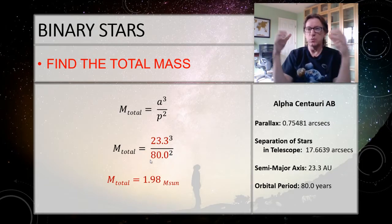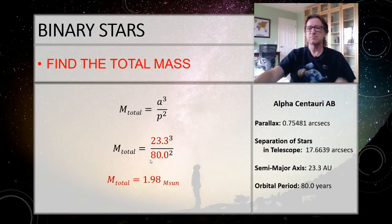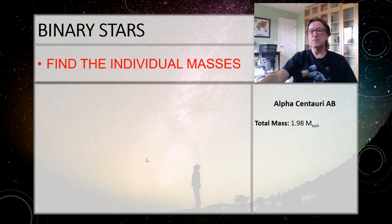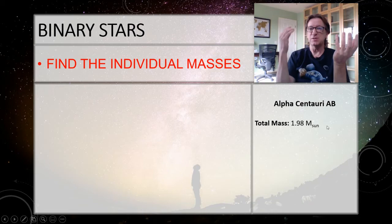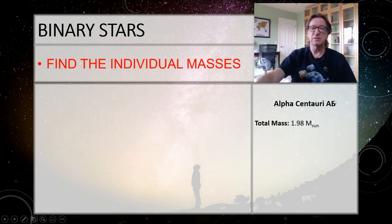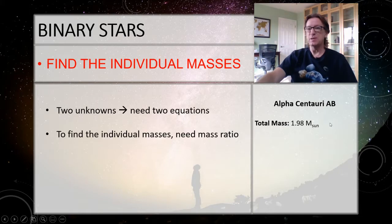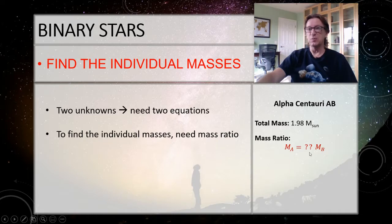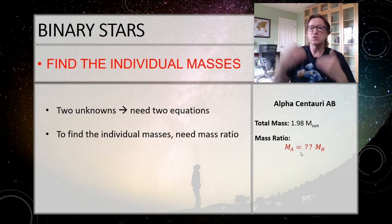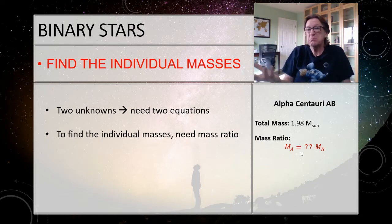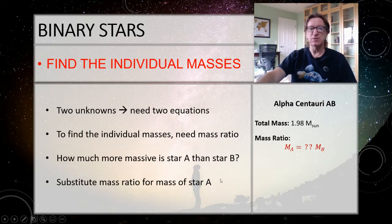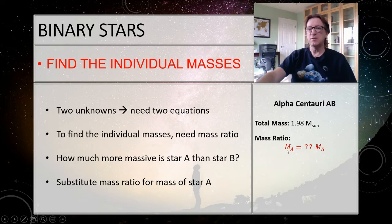Now I need to find the individual masses. I have two unknowns — the mass of Alpha Centauri A and the mass of Alpha Centauri B — so I need two equations. The first equation is: ma + mb = 1.98. The second is the mass ratio, which tells you how much more massive star A is than star B. The mass ratio is given to you: ma = 1.21 × mb. So wherever I see ma, I substitute 1.21 mb.